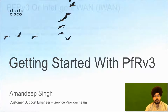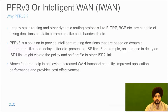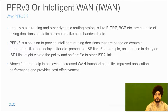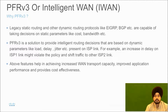PFR, also known as iWAN — why do we actually require it? Legacy routing protocols like EIGRP and BGP are incapable of taking decisions based on dynamic variables that keep changing on ISP links, for example jitter, delay, load on the link, etc. To address these parameters and dynamically change routing across two ISP links, Cisco has developed this technology known as iWAN or PFR version 3.